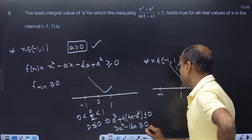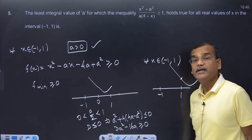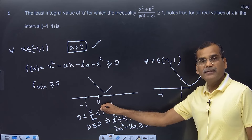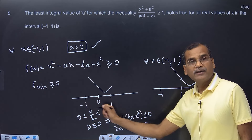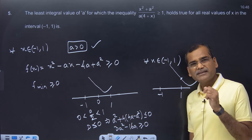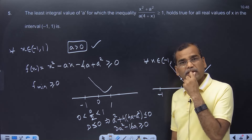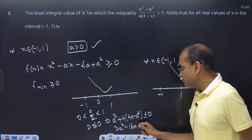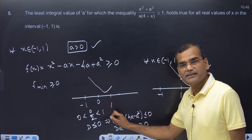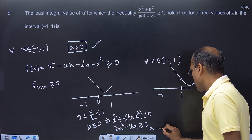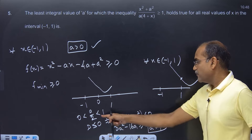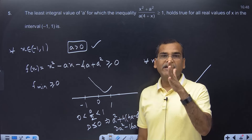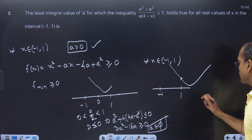From the calculation, I get the condition as: a belongs to (−∞, 0) ∪ (16/3, ∞). But you know that in Case 1, a/2 is between 0 and 1, meaning a is between 0 and 2. And 16/3 is greater than 2. So the intersection of (−∞, 0) ∪ (16/3, ∞) with (0, 2) gives an empty set. So Case 1 does not give any valid value of a.